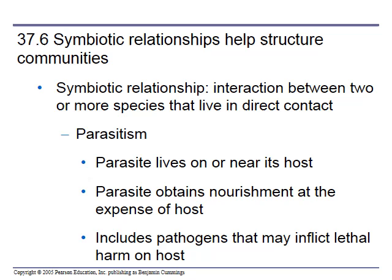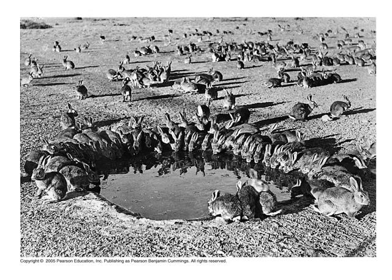Symbiotic relationships help structure communities. Symbiotic relationships are interactions between two or more species that live in direct contact — not indirect competition for something, but direct contact. Parasitism is an example: parasites live on or near the host, obtain nourishment at the expense of the host, and include pathogens that may inflict lethal harm. This includes things like viruses, bacteria, and amoeba.